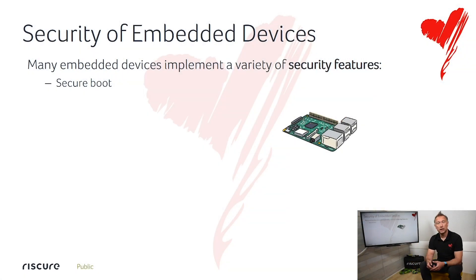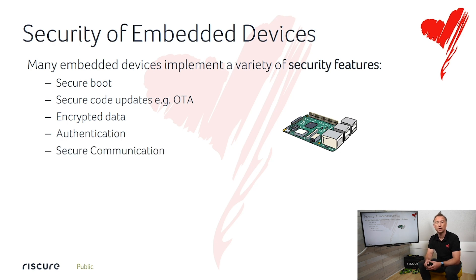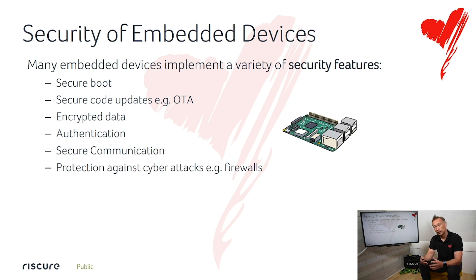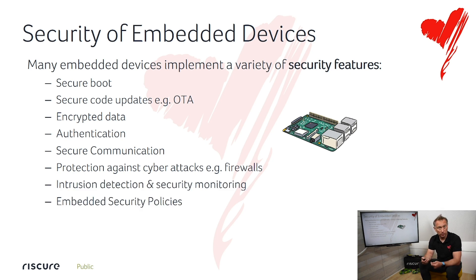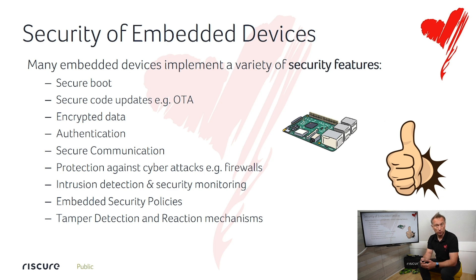Many security features are already implemented in embedded devices. We see a lot of implementation of secure boot, secure coding like over-the-air updates as seen in automotive, encrypted data, authentication mechanisms on different interfaces, and secure communication internally and externally. From a cybersecurity point of view, firewalls, intrusion detection systems, policies, and tamper detection and reaction mechanisms — for example counters, or if something is triggered something is wiped — are implemented. In general, this is good practice.